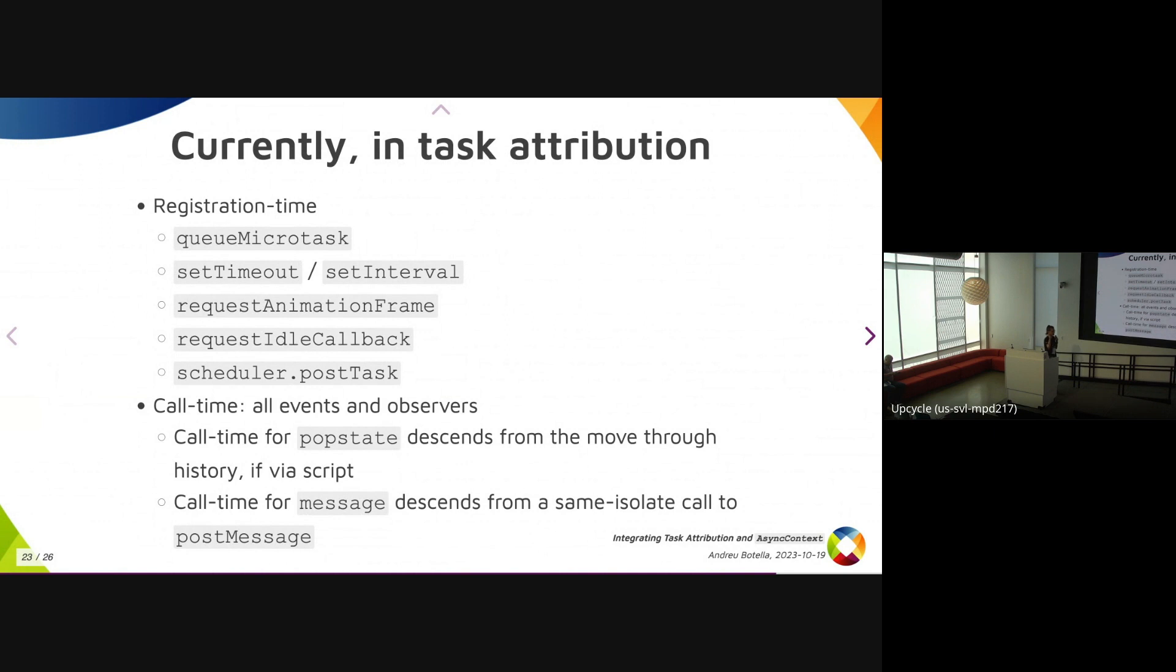And for message, which is when you call postMessage on a window or a worker, if the message comes from the same isolate, then the call time descends from the context at the time of the call to postMessage. This is supposed to, this works that way, as I was discussing with Scott the other day, this is because many userland JavaScript libraries use postMessage as a way to schedule things when there was no scheduler.postTask and those things like that.